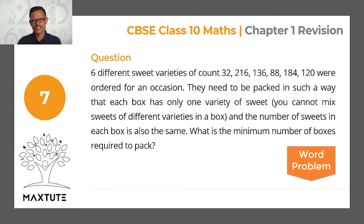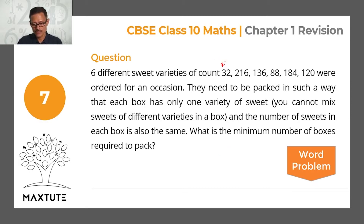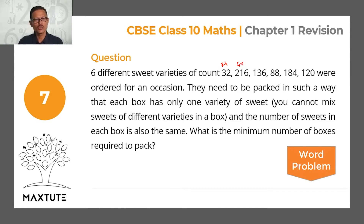Six different sweet varieties of various counts are given. They're ordered for an occasion. They need to be packed in such a way that each box has only one variety of sweets. For example, if this is Rasagulla and this is Gulab Jamun, if a box contains Rasagullas, it will contain only Rasagullas. You cannot mix sweets of different varieties in a box. That's a condition given.